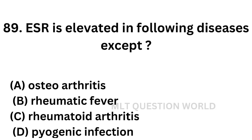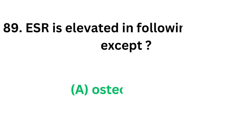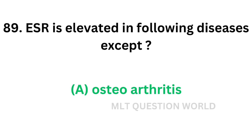Question number 89: ESR is elevated in the following diseases except. Option A: osteoarthritis. Option B: rheumatic fever. Option C: rheumatoid arthritis. Option D: pyogenic infections. Rheumatic fever, rheumatoid arthritis, and pyogenic infections cause an increase in ESR, but in osteoarthritis there will be a normal ESR level. So the correct answer is Option A, osteoarthritis.